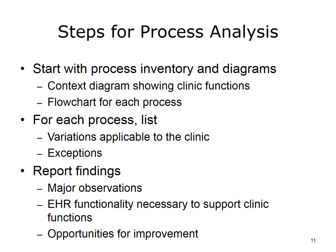By less detailed, we mean identifying the major things that, based on a clinic's core functions, the EHR needs to do, and understanding how the clinic does each. We adopt the less detailed approach here. Start with process inventory and process diagrams, covered in Units 2 and 3. These should provide a context diagram showing clinic functions and a flowchart for each process. For each process, list the process variations applicable to the clinic, as well as exceptions that often occur. For example, for a patient visit, a common exception would be that a patient cancels or does not show up. The last step in process analysis is to report findings. The findings from a process analysis would include major observations, a list of EHR functionality necessary to support clinic functions, and opportunities for improvement, technology-assisted and otherwise.